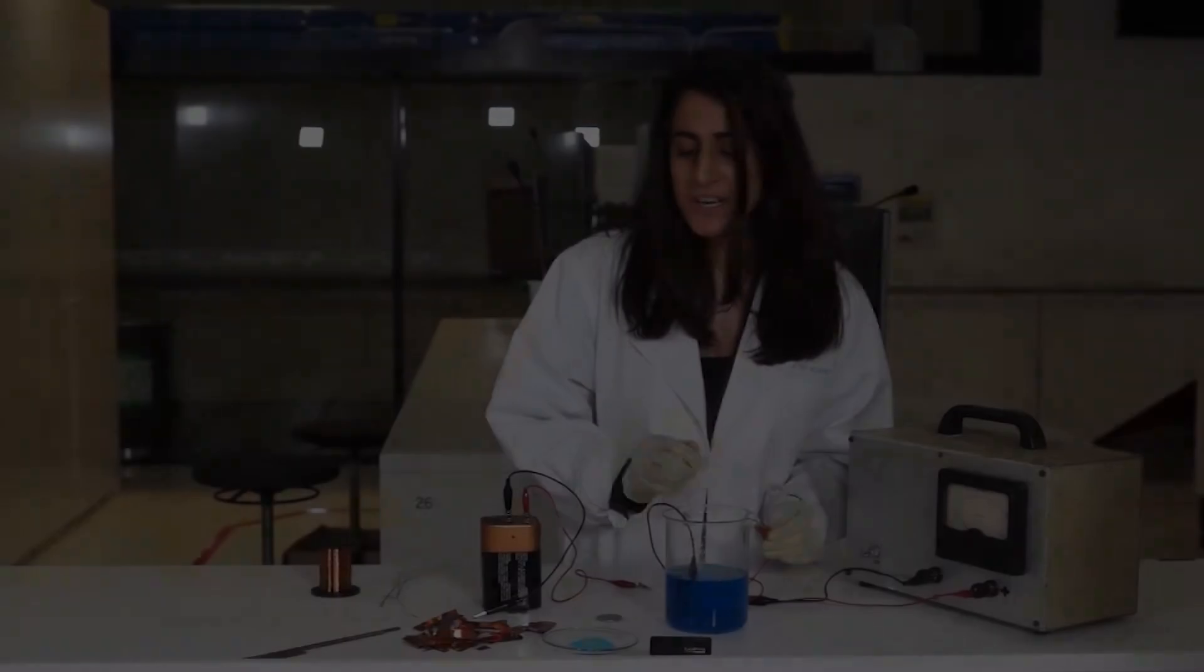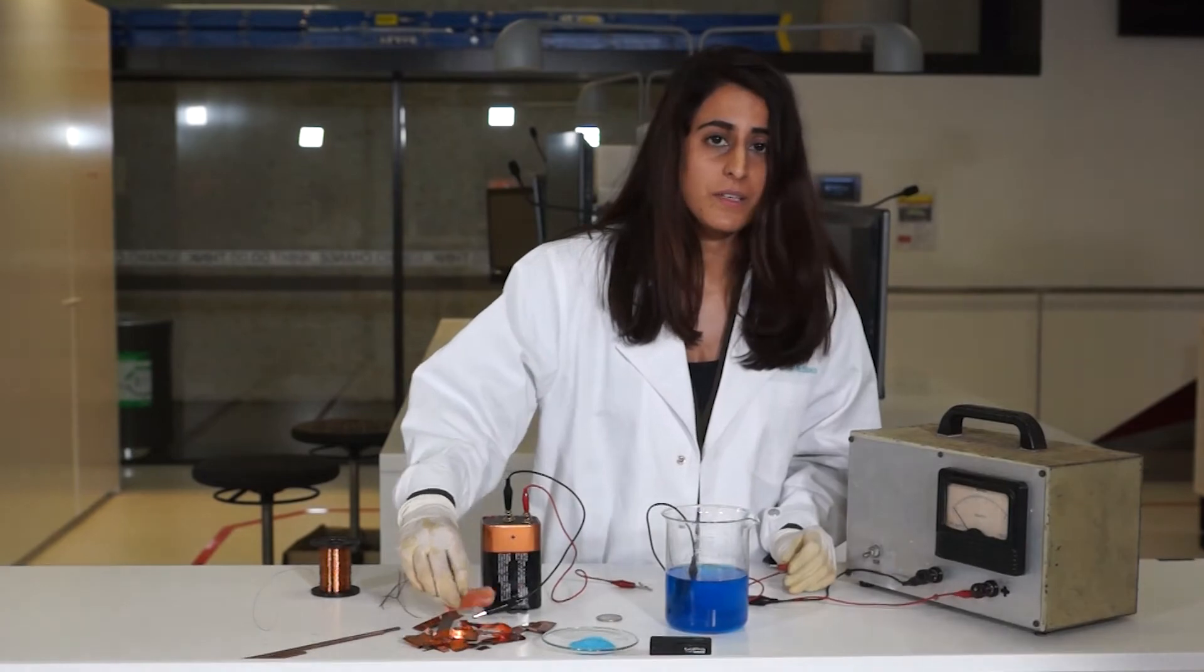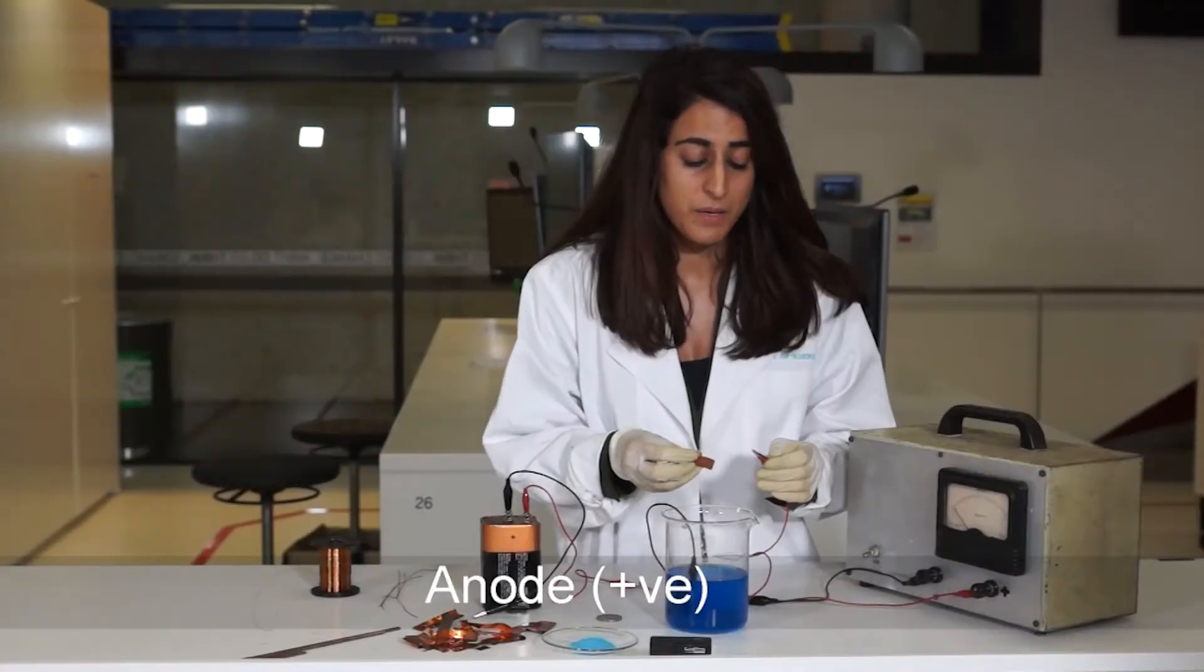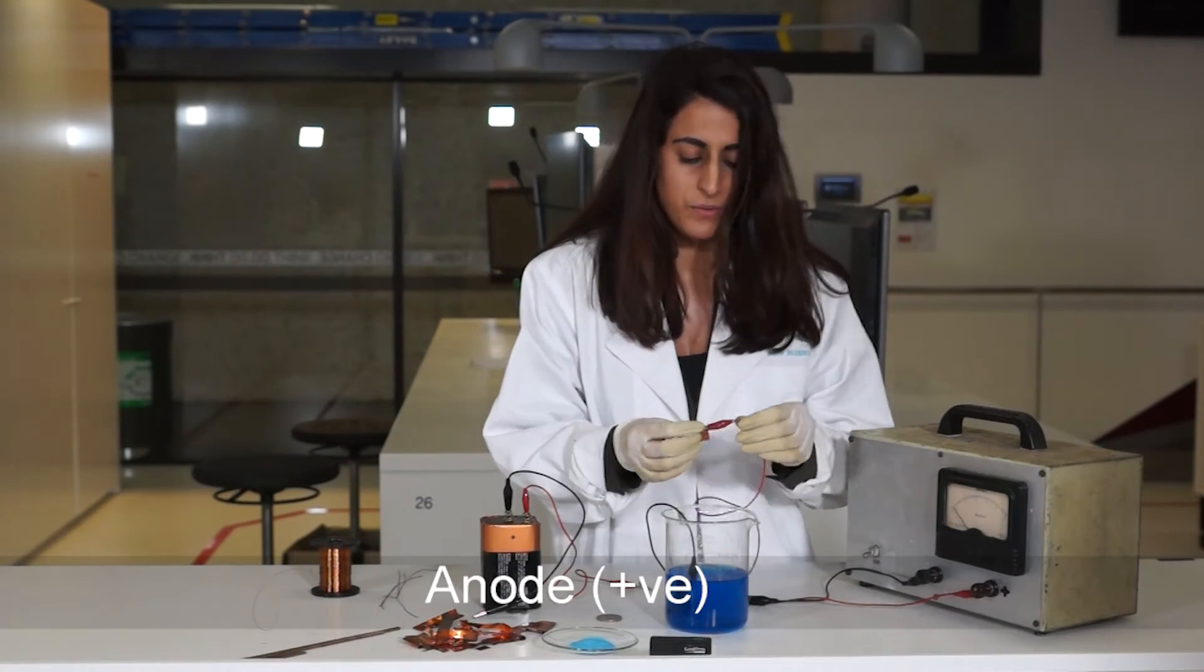Now we need another electrode to complete the circuit. And for that we're going to use this copper metal, and we're going to connect it to the positive terminal of this power source.